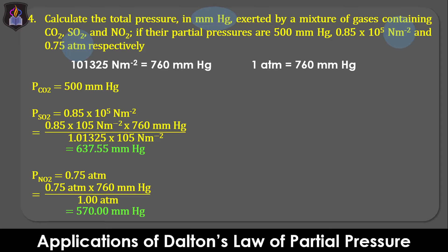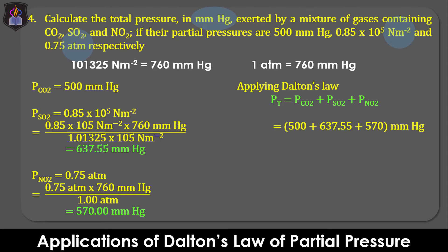Applying Dalton's Law: the total pressure equals the partial pressure of CO₂ plus the partial pressure of SO₂ plus the partial pressure of NO₂. The total pressure of the mixture is 1707.55 mmHg.